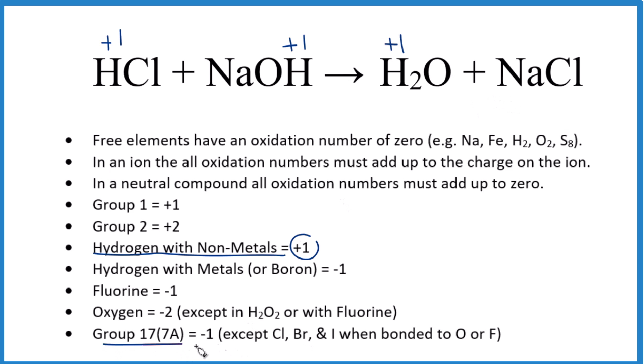Chlorine, that's in group 17. It's usually negative 1 with a few exceptions. So here, bonded to hydrogen, negative 1, and bonded to the sodium, that's going to be negative 1.